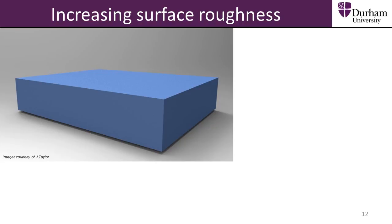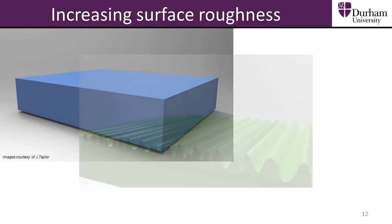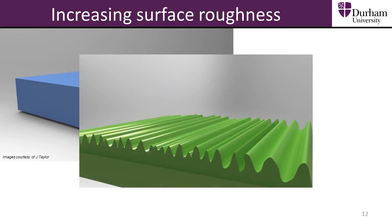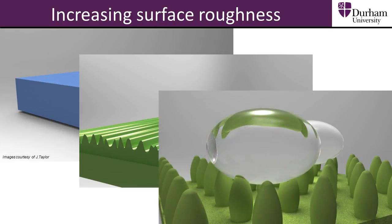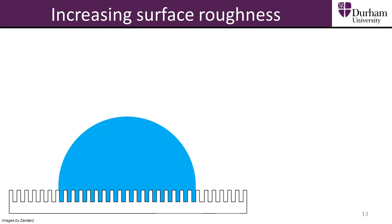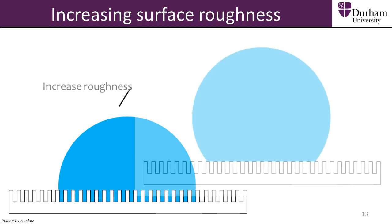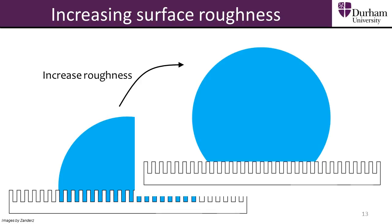The second approach to obtain a superhydrophobic surface is to increase the surface roughness. The more bumps and holes a surface has, the harder it is for water to spread out over the surface. Increasing the roughness of a hydrophobic surface makes it harder for a water droplet to spread out, and when a surface becomes sufficiently rough, there is a transition from a Wenzel to a Cassie-Baxter state.